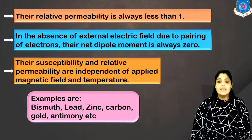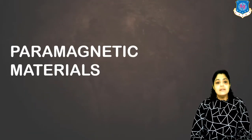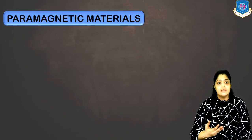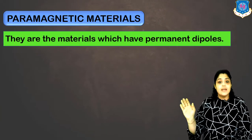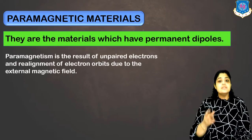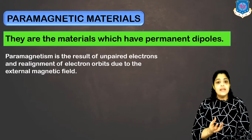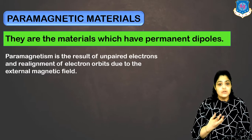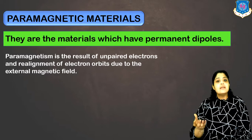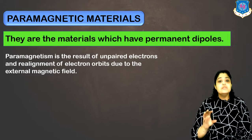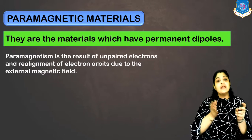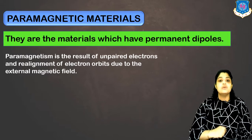Now let's discuss the second category — paramagnetic materials. These are materials which have permanent dipoles. Paramagnetism results due to unpaired electrons and the realignment of electron orbits in the presence of an external magnetic field. Paramagnetic materials have permanent dipoles but all of them are randomly oriented. So when magnetic field is not applied, due to random orientation of dipoles, the net dipole moment is always zero.